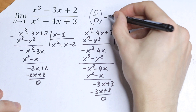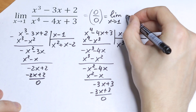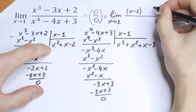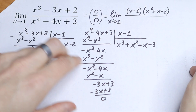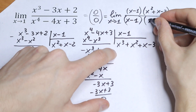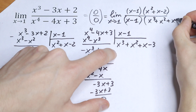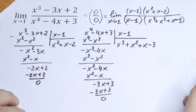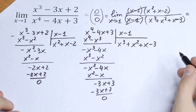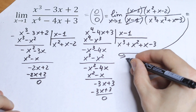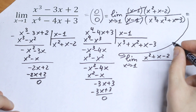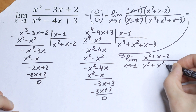So we can write the next step. It will be equal to the limit as x approaches 1. The numerator can be written as (x minus 1) times (x-squared plus x minus 2), and the denominator can be written as (x minus 1) times (x-cubed plus x-squared plus x minus 3).